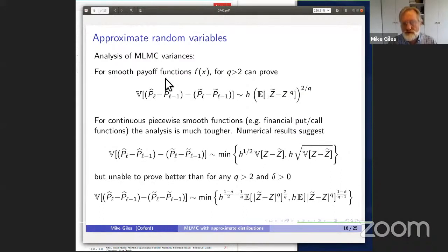Following that result for the evolution of the path, if we have a smooth payoff function f of x, then we get this corresponding expression for the variance of that four-way difference. If it's not a smooth function, particularly looking at the case of financial put call options where it's continuous and piecewise smooth, the analysis got a whole lot nastier. The numerical results indicate this expression - the minimum of these two terms, h to the half times the variance or h times the square root of the variance. But the best that we were able to prove is this rather complicated looking expression at the bottom there. Even getting to that expression was fun.